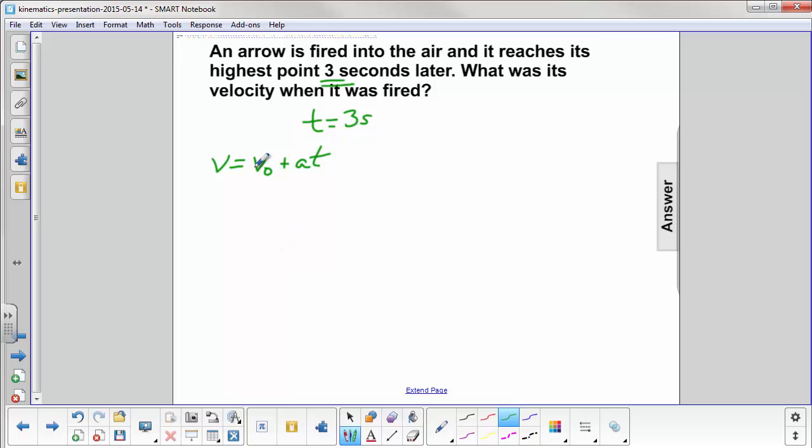We're trying to find v0, the initial velocity, the velocity when it was fired. So the first thing we do is isolate v0 and move it over to the left side.